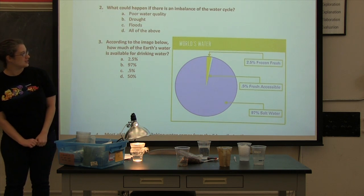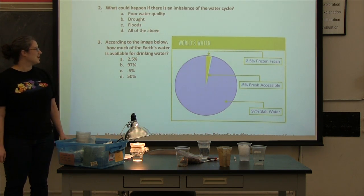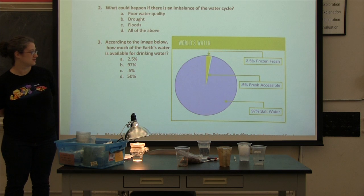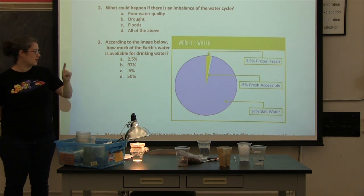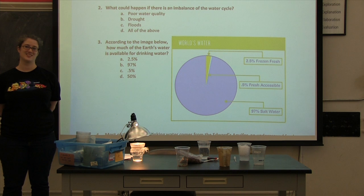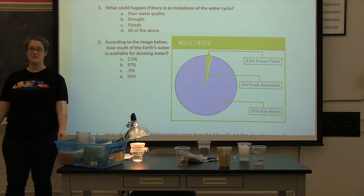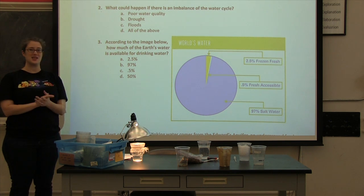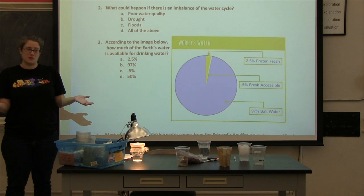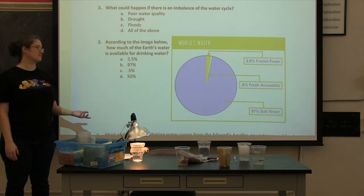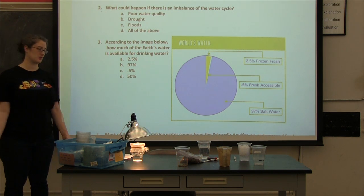Now number three. Looking at the image there, how much of the Earth's water is actually available for drinking? A, B, C, or D? That's right, only 0.5% of all the water on Earth is available for water, so what do you think that means? What should we do with the water that we have? Save it all. We should save it, or we should be conservative about it, because there's only so much water that's available for us to drink at any time.